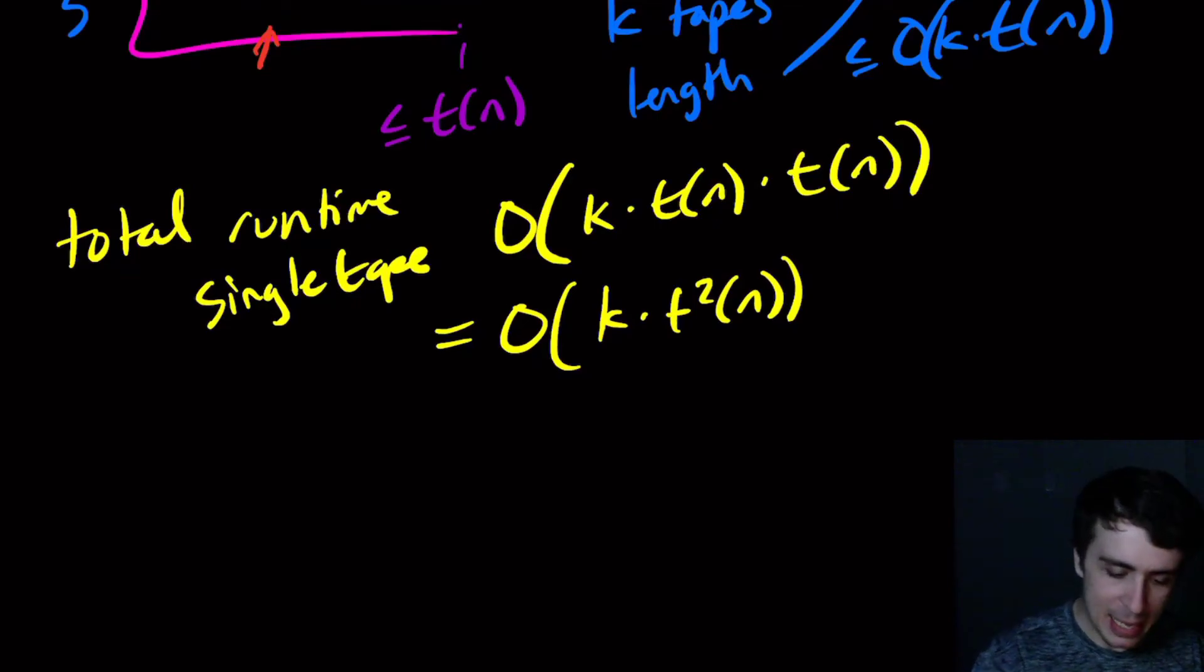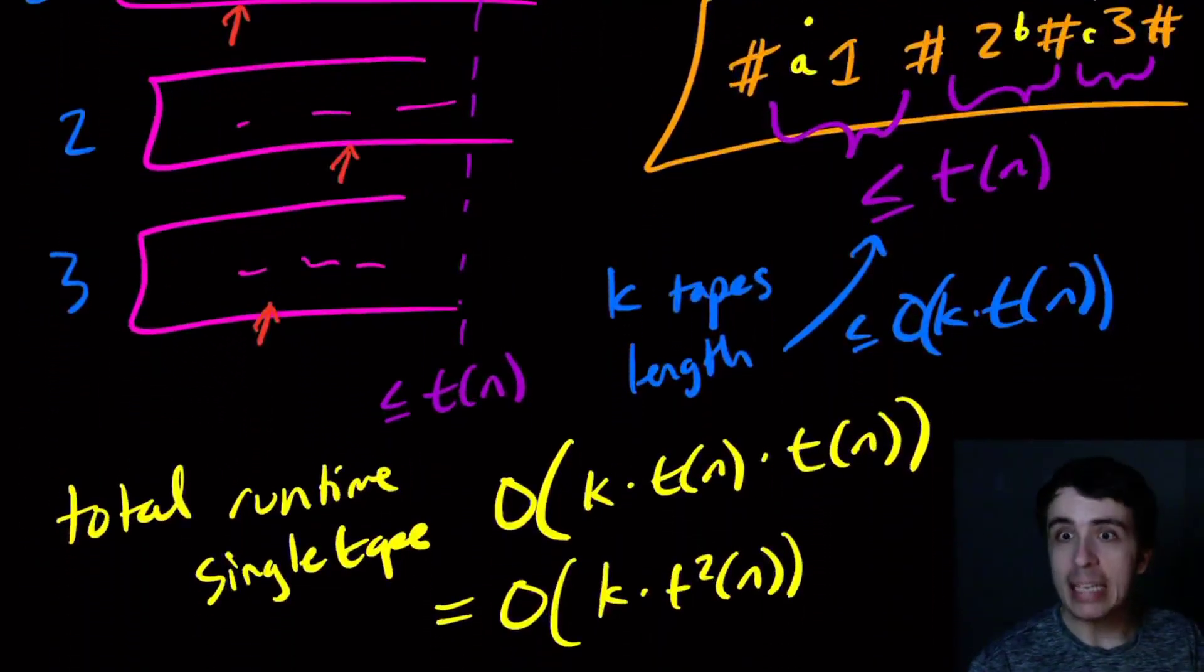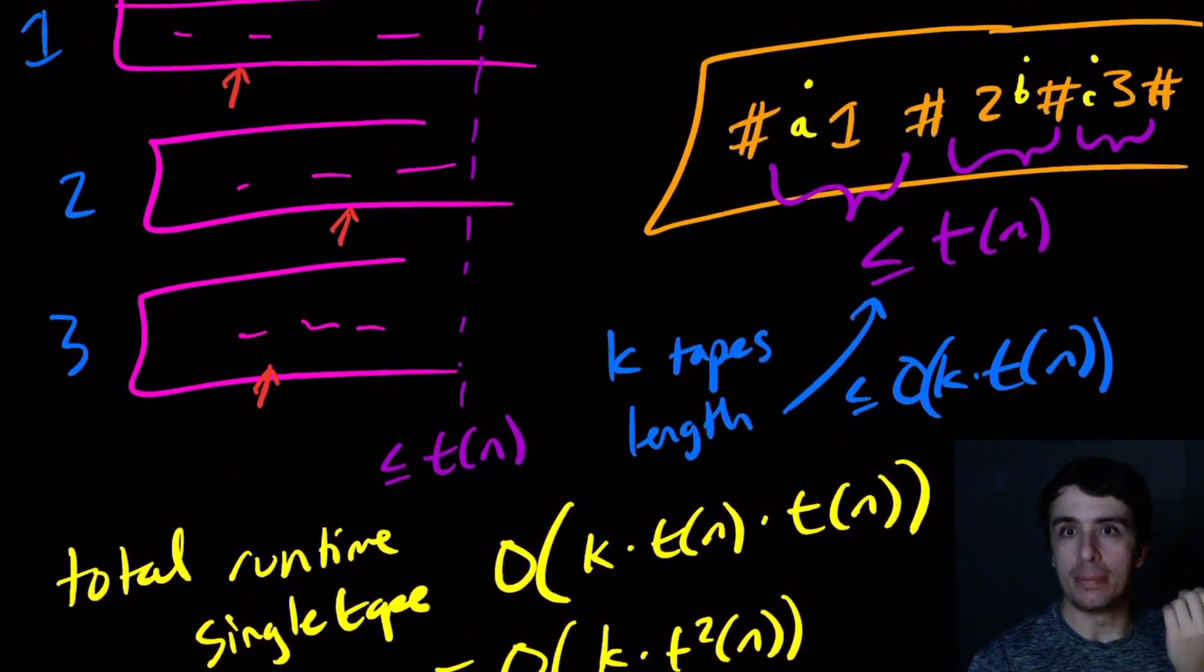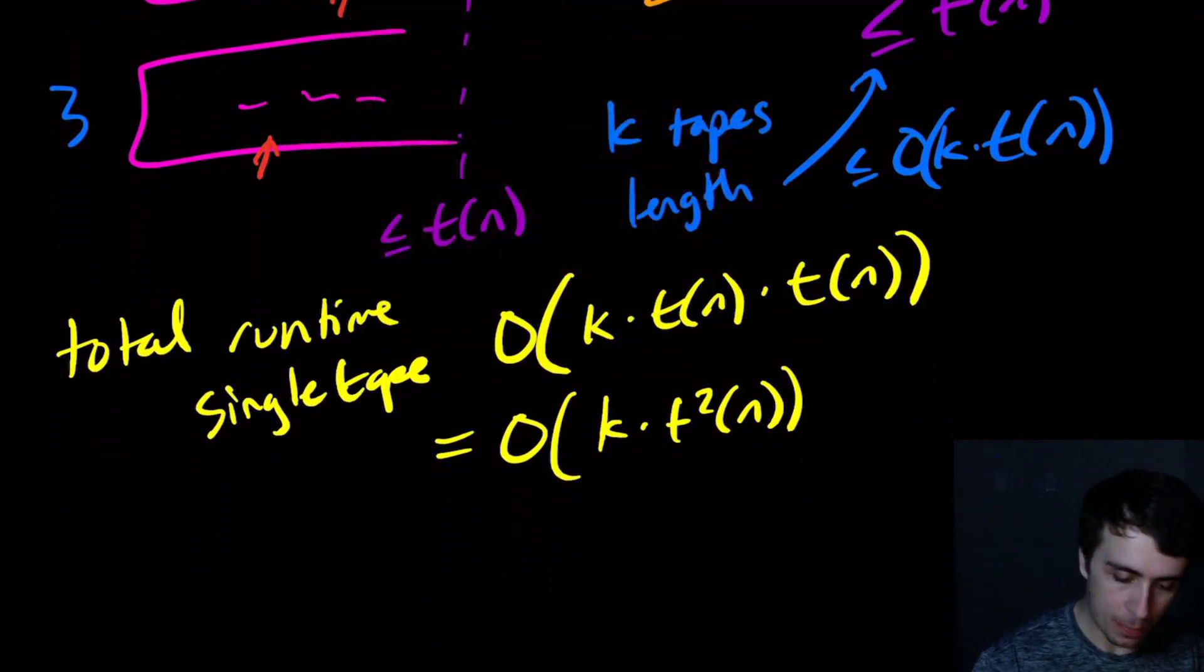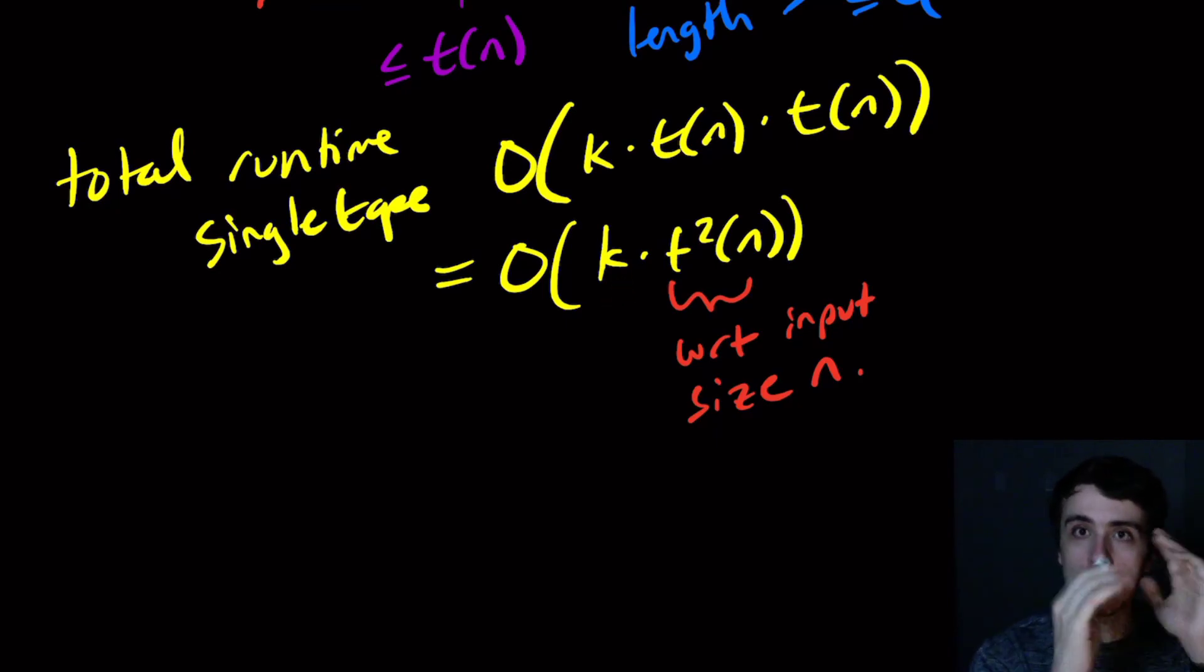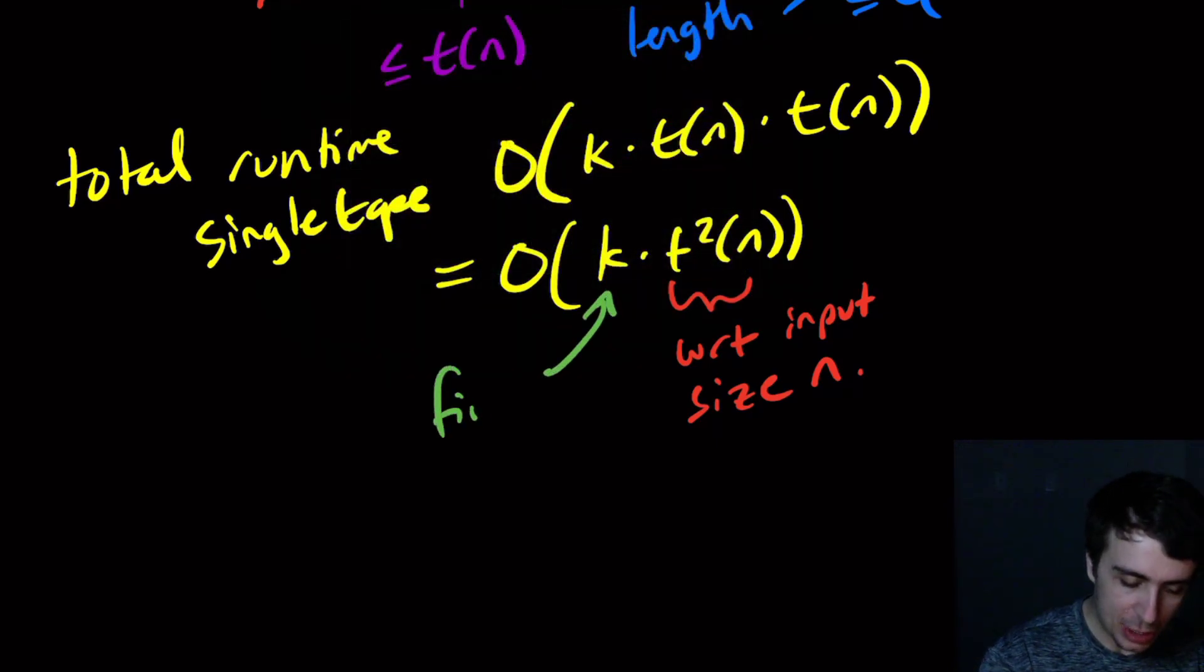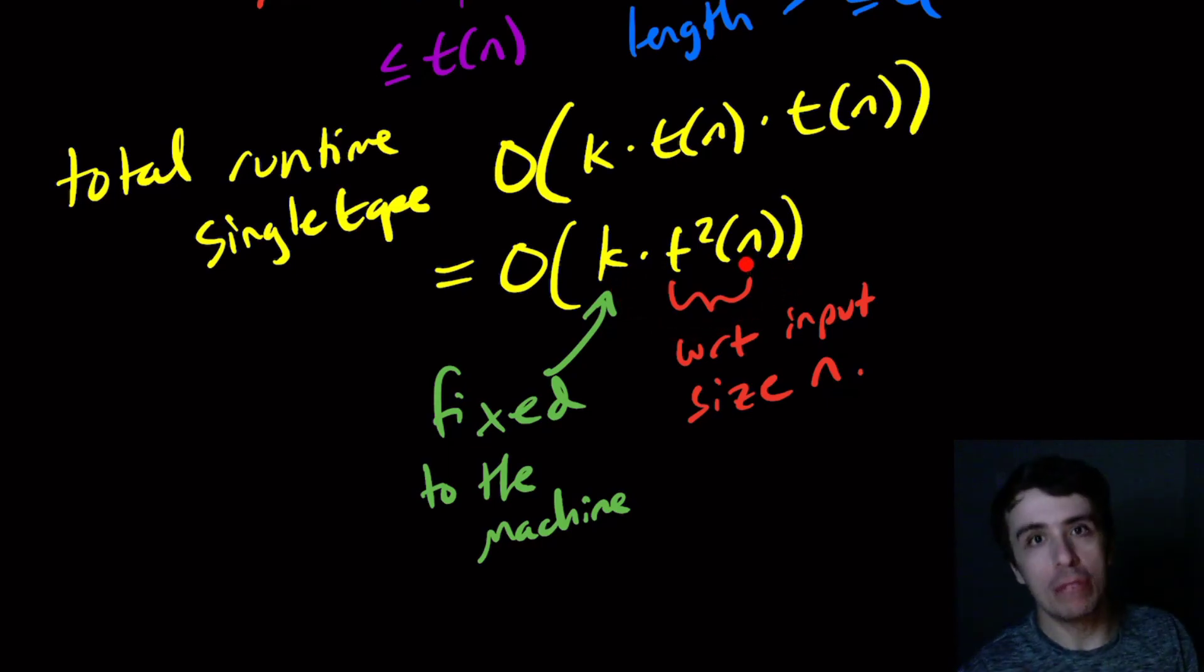And so you may think, well, why is k not, well, why is k thrown away? Because Ryan claims that we can get a T squared n, there's no k here. And you may think, well, k is going to change. Well, it turns out no, because the T of n runtime is measured with respect to the size of the input. So this is with respect to the input size, which is n. This k is fixed. Once I make the machine, it's fixed. So this is fixed to the machine. And so it's not going to change with respect to the input. And so we can treat it then like a constant with respect to the input size.